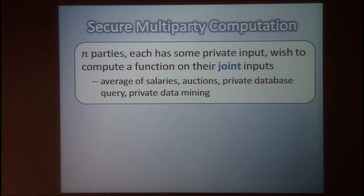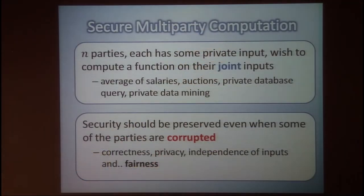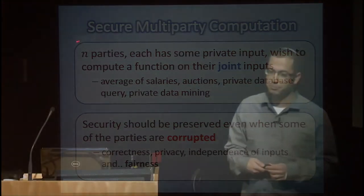My salary is a private input and I don't want to reveal it to anyone. So how can we compute something on our inputs without revealing the inputs? Security should be preserved even when some of the parties are corrupted, colluding, trying to get more information, or deviating from the protocol specification. The security properties we want to ensure are correctness, privacy, independence of input, and fairness — the property we are going to focus on in this talk.